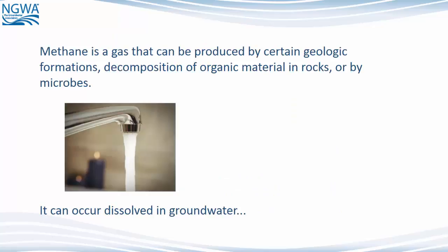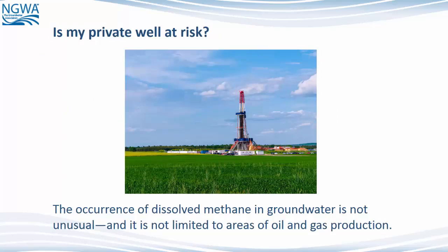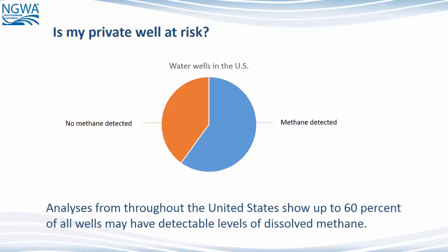Methane is a gas that can be produced by certain geologic formations, decomposition of organic material in rocks, or by microbes. It can occur dissolved in groundwater or as a free gas. The occurrence of dissolved methane in groundwater is not unusual and it is not limited to areas of oil and gas production. Analyses from throughout the United States show up to 60% of all wells may have detectable levels of dissolved methane.